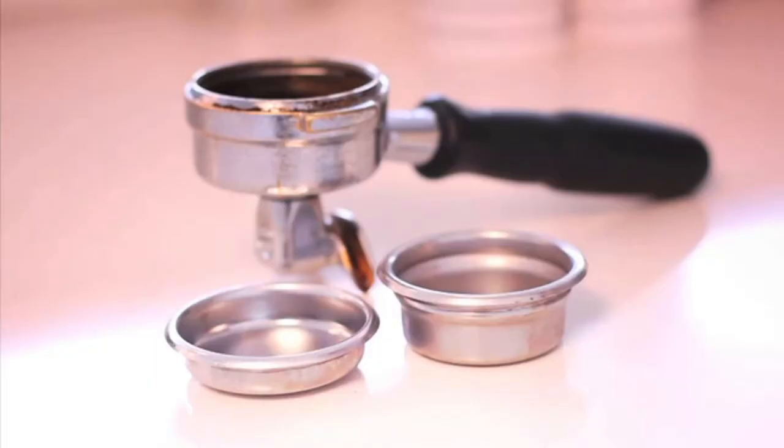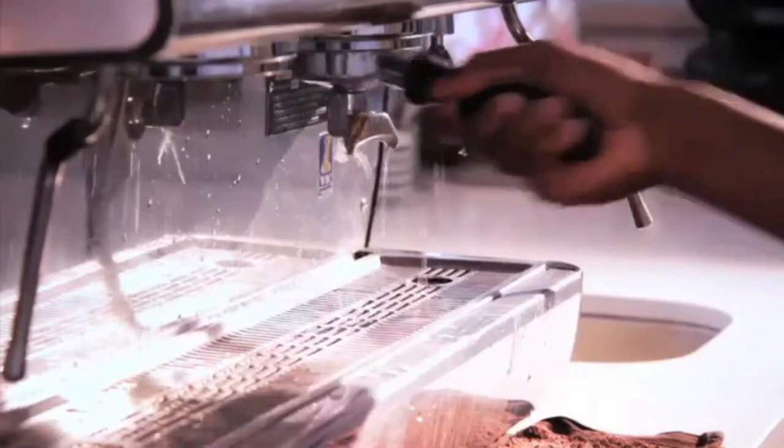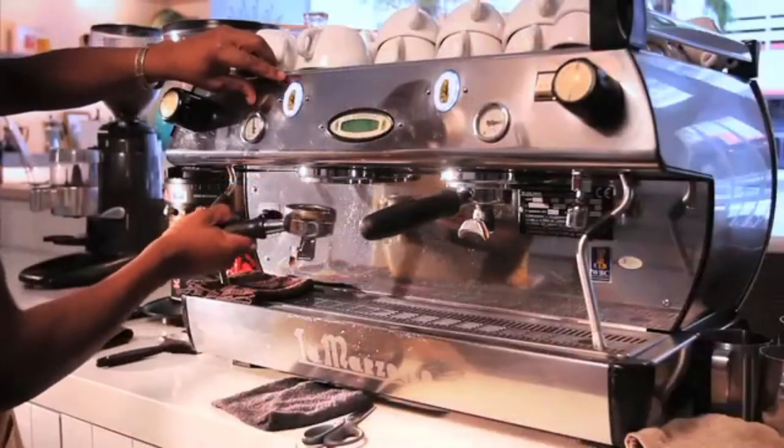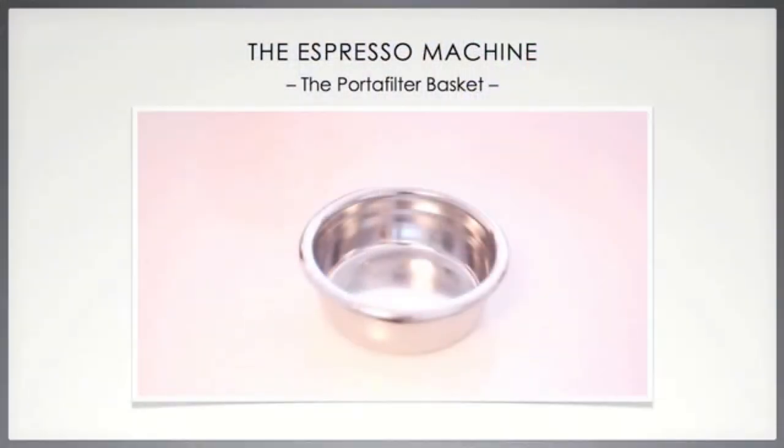There is a small spring around the rim of the portafilter which is used to hold the basket securely. The portafilter has a handle which assists in placing and tightening this tool into the espresso machine.